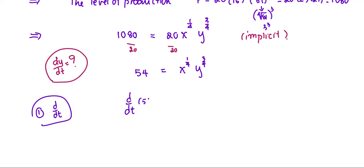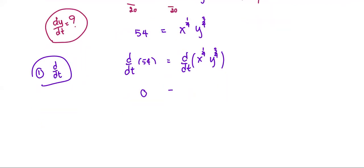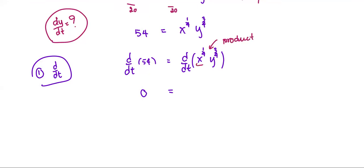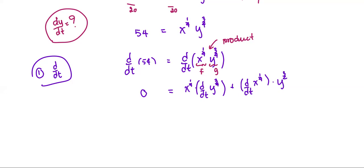So d/dt of 54 equals d/dt of x to the power 1/4 times y to the power 3/4. The left-hand side is a constant, so its derivative is 0. The right-hand side is a product of two functions, so we apply the product rule: f times g prime plus f prime times g, where f is x to the 1/4 and g is y to the 3/4.